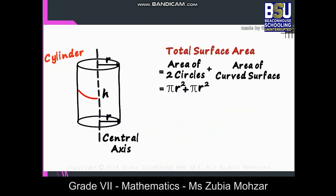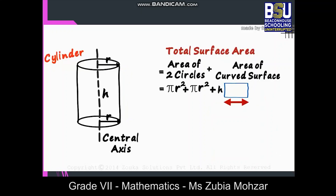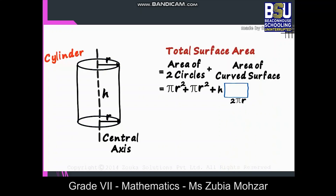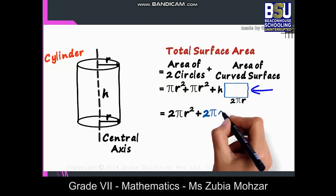But what is the area of the curved surface? This is interesting. The curved surface, when opened up, will look like a rectangle. What will be the length and the breadth of this rectangle? The breadth is easy — it will be the height of the cylinder. But what about the length? The length of the rectangle will be the circumference of the circle, which is 2πr. All we did was open this curved surface up. These two circles together add up to 2πr², and the area of the rectangle will be 2πrh.